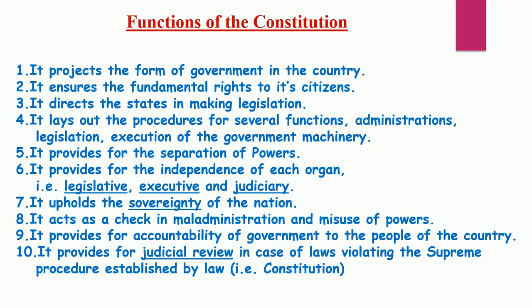The next function: it provides for accountability of government to the people. The government is answerable to the citizens of its country. It is very important for a government to answer each and every single question about the functioning and the programs which a government is possessing or launching. Accountability also means to have the trust of its people. The last one: it provides judicial review in case of laws violating the supreme procedure established by law. If somebody misuses the power or violates the law prescribed in the constitution, there are certain punishments for them. That is what judicial review is.